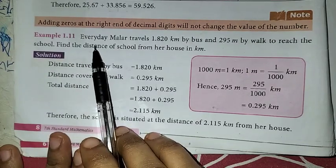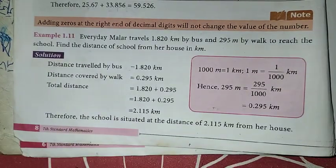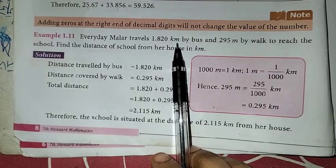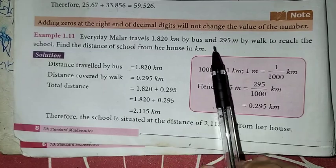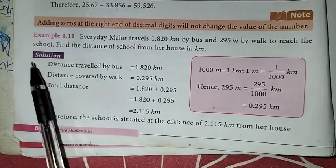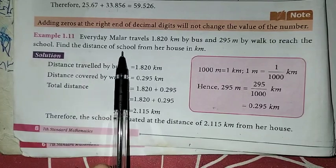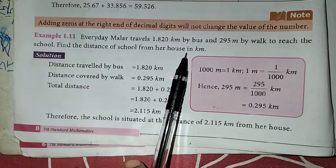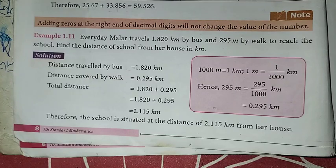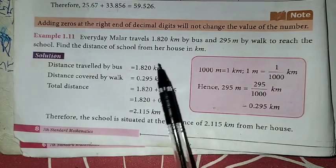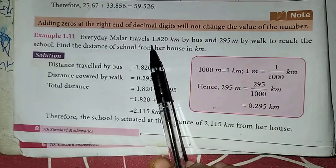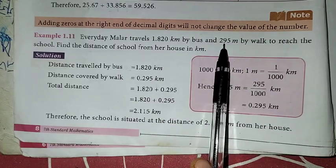In the problem: everyday Malar travels 1.820 km by bus and 295 m by walk to reach the school. Find the distance of school from her house in kilometer. So everyday Malar travels — first, bus is covering a distance in kilometers, then walk is covering a distance in meters.